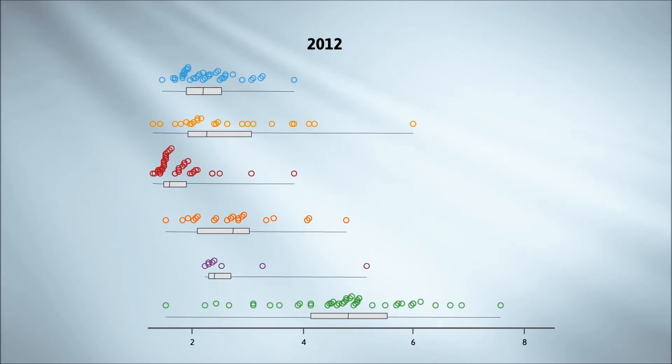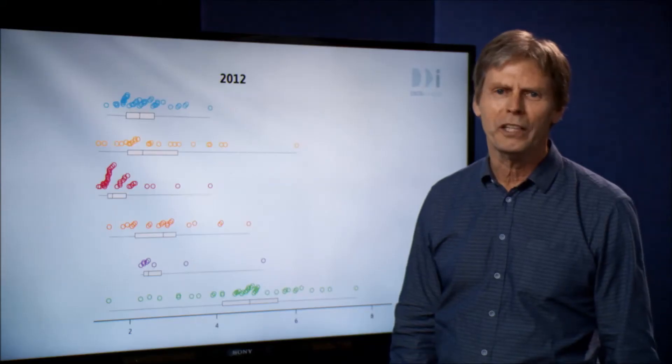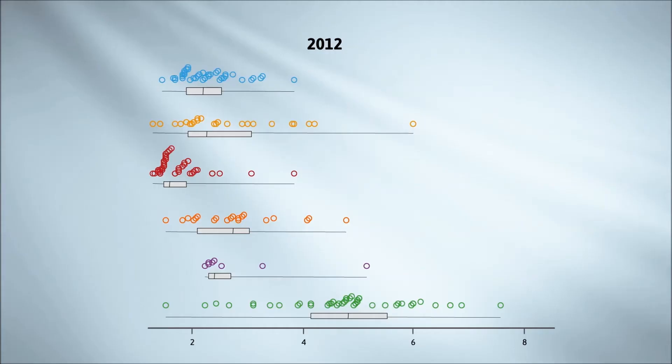Did you notice how everything gradually shifts to the left, towards smaller fertility rates? By 2012, every region except sub-Saharan Africa is centered well below three. Remember, we started at over six. And even sub-Saharan Africa has come down quite a bit.